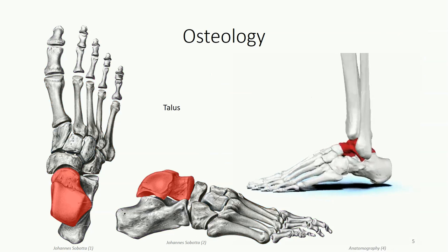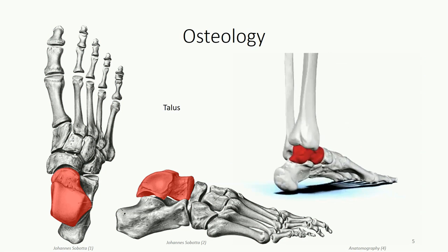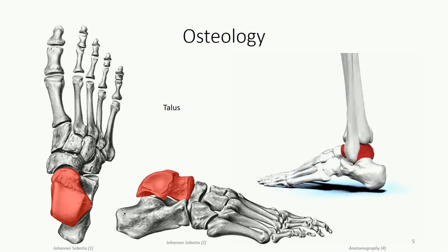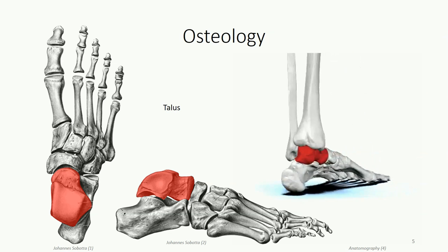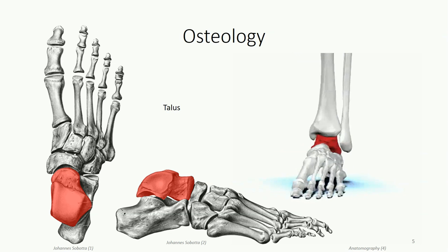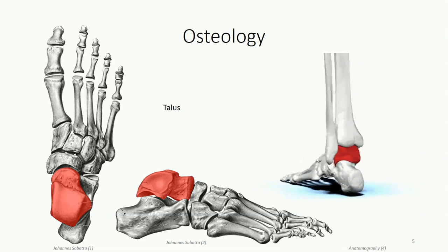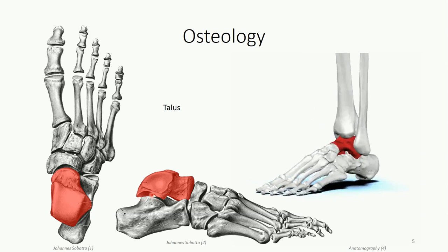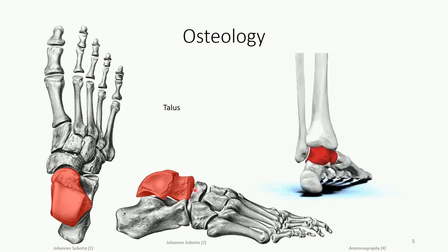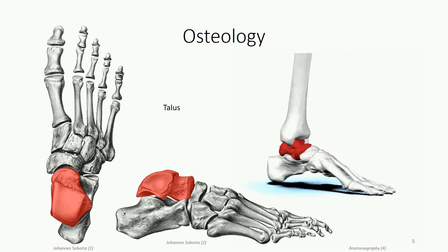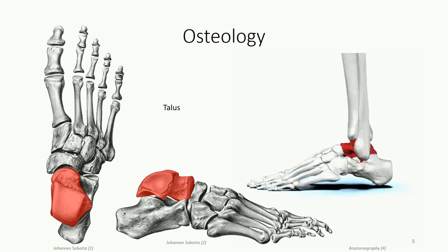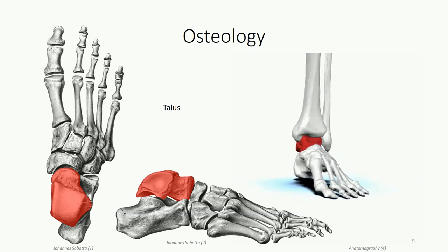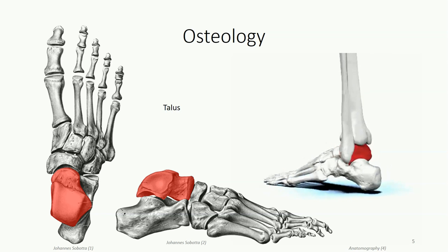The talus is the most superior of the tarsal bones. It receives weight from the tibia and redistributes it through the other bones within the feet. It has no muscle or tendon attachment itself, but it does have a number of articulating surfaces. The talus has three regions: a posterior body that articulates with the tibia and fibula superiorly and with the calcaneus inferiorly; a neck region; and a head region which projects anteriorly and inferomedially to articulate with the navicular bone. The head is palpable as a hard, rounded mass on the medial aspect of the foot, just distal to the medial malleolus, particularly when the ankle is placed in eversion.